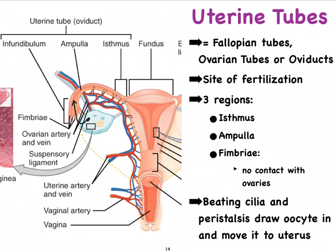If fertilization is to occur, it typically happens somewhere in the fallopian tube. Because most sperm cells are literally going to be dumped into the peritoneal cavity, there is a chance that fertilization occurs outside the fallopian tubes, which is not a good thing. Sometimes that is referred to as an ectopic pregnancy.